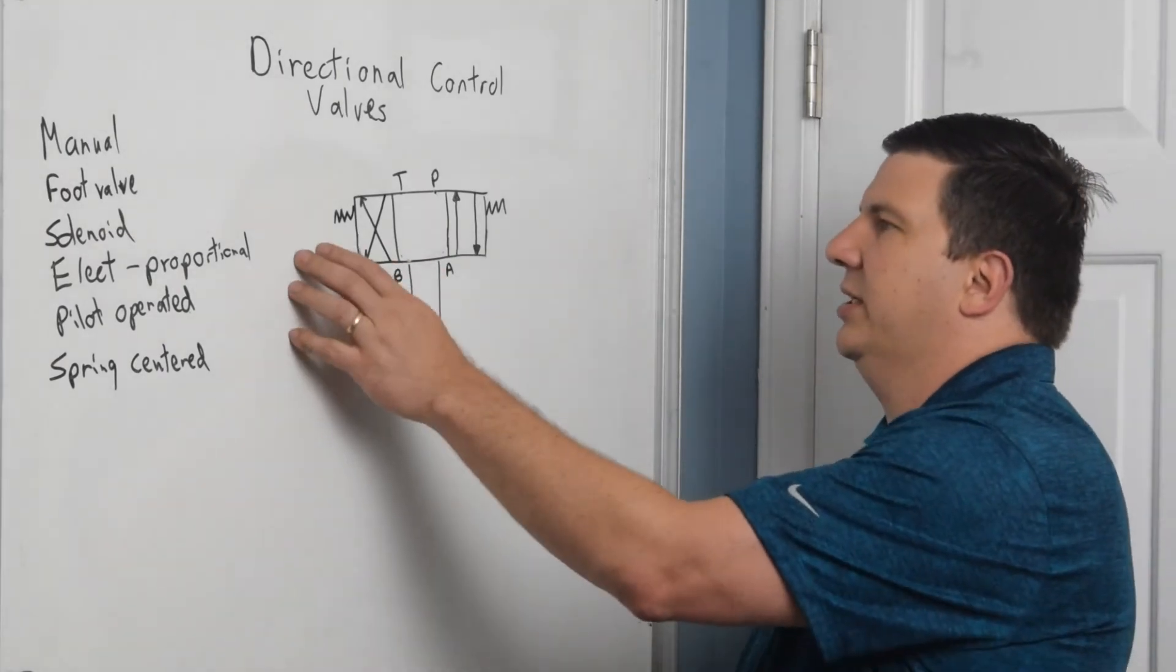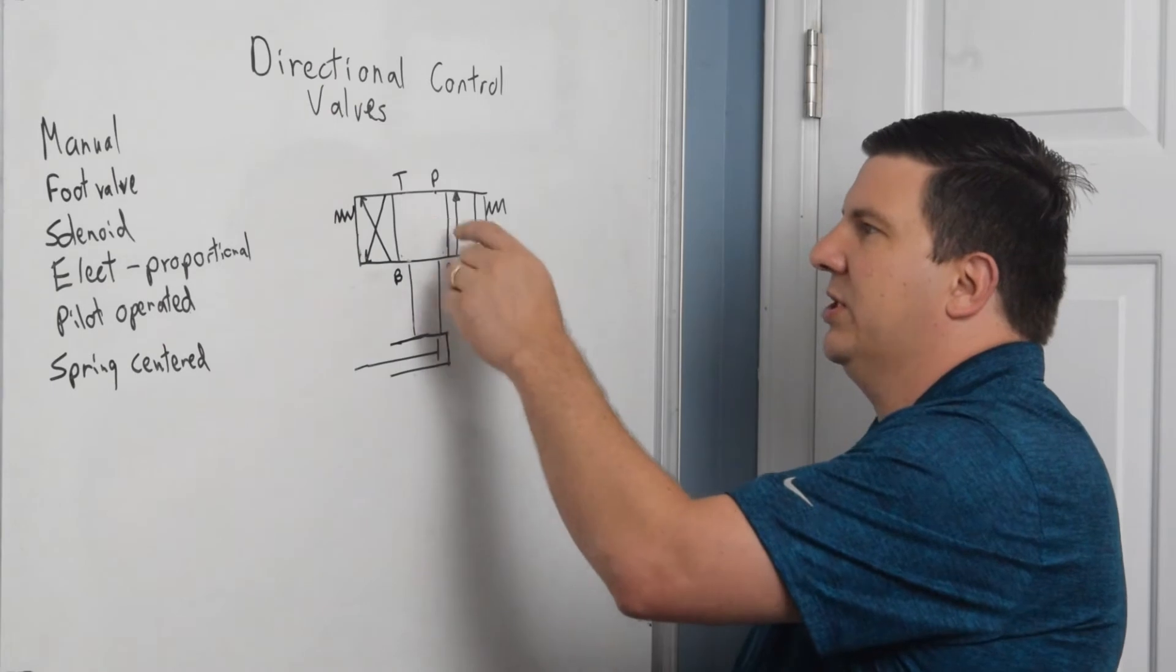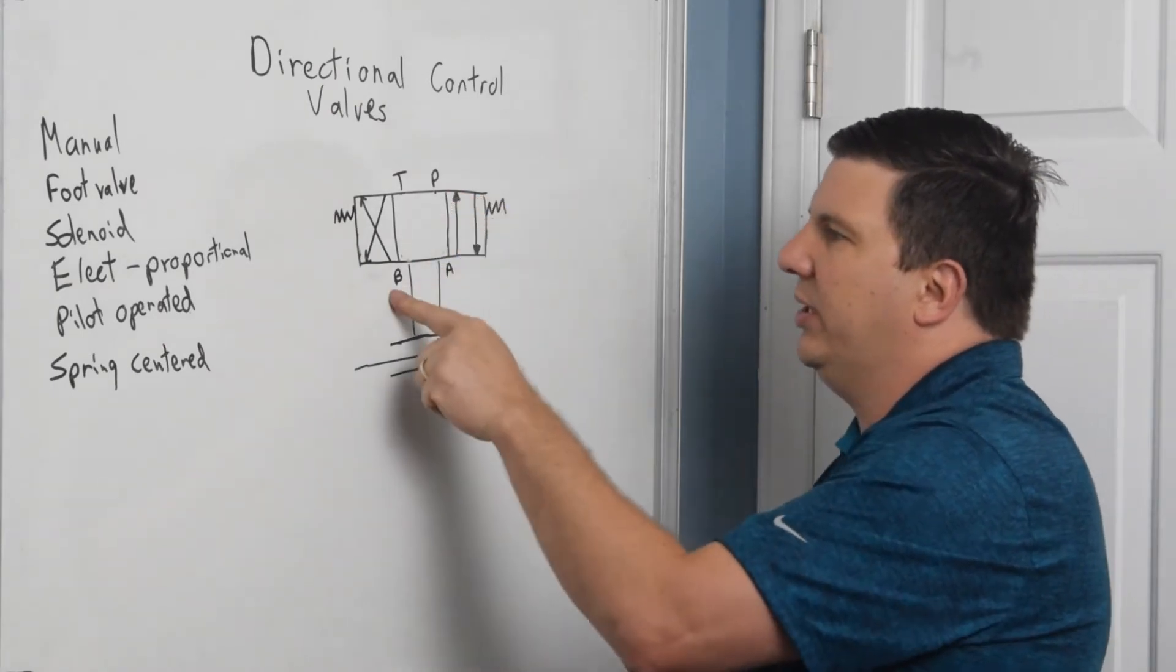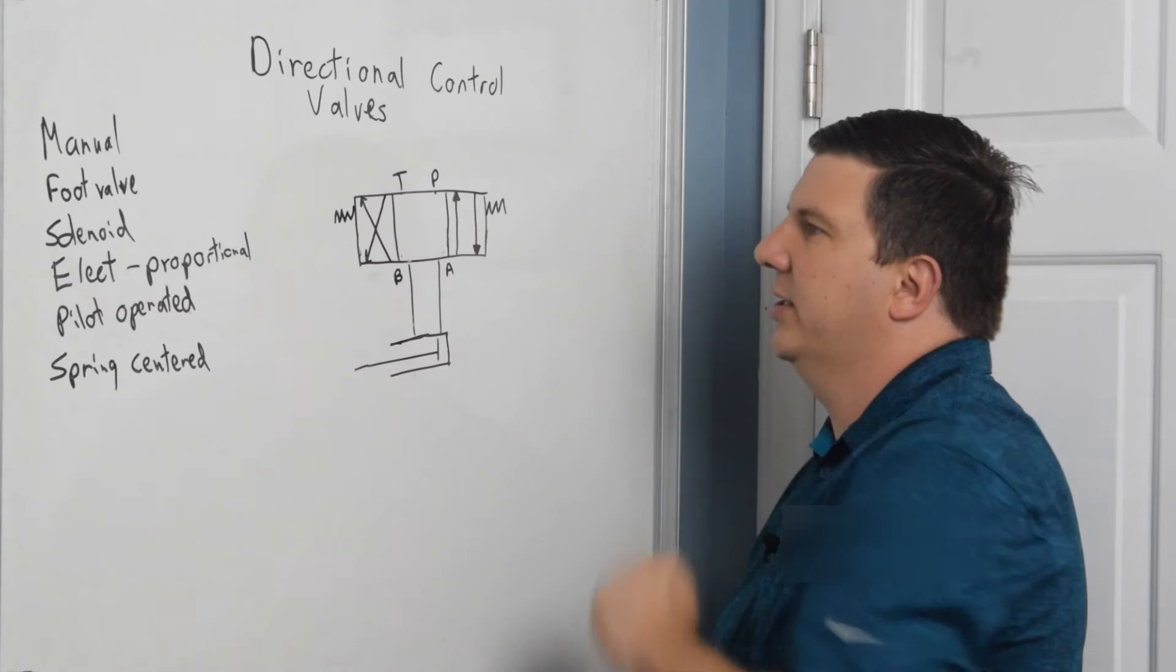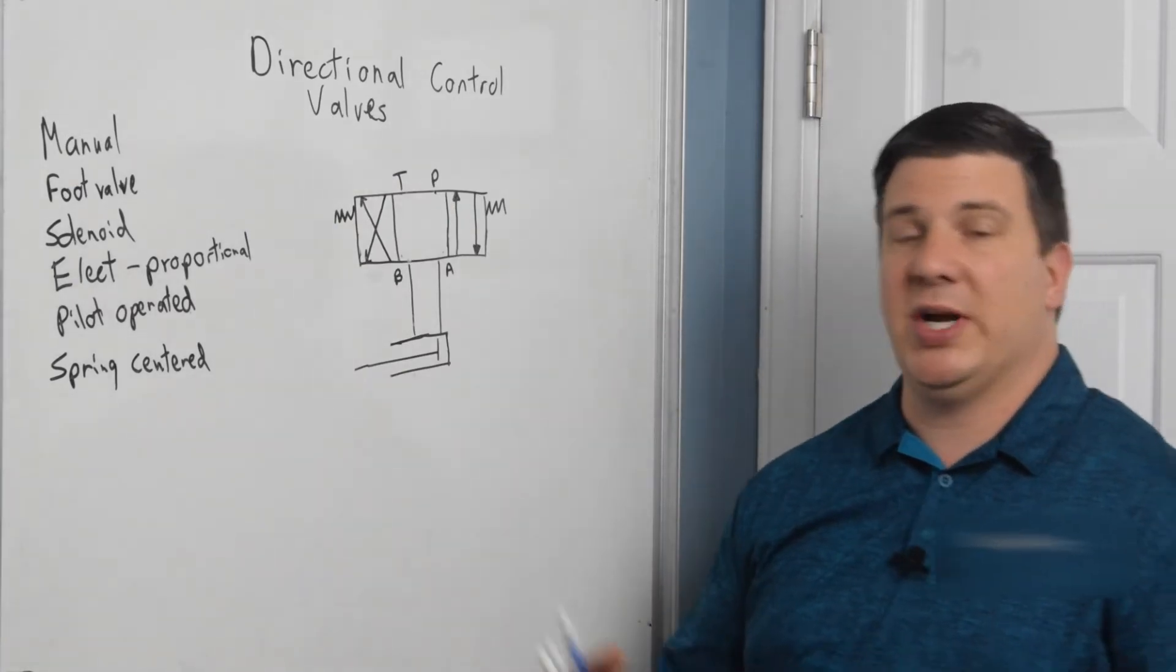The other one is I can do reverse flow, which is now going to send pressure to B and A to tank. And that is just going to retract the cylinder.